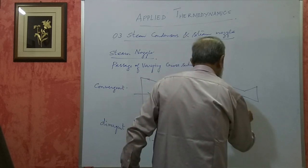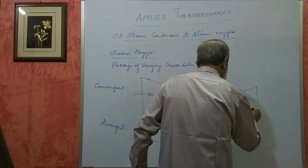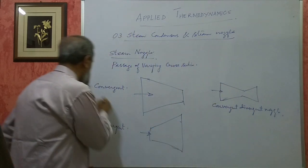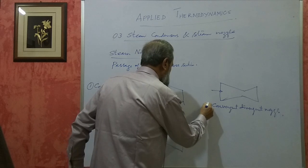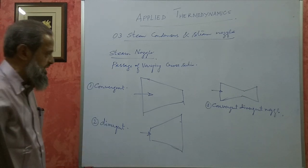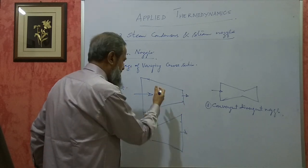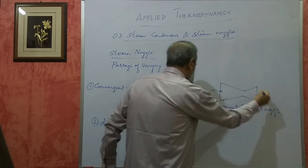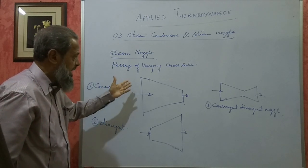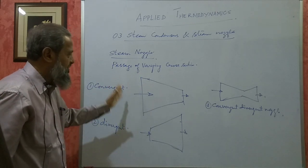So there are three types of nozzles: convergent, divergent, and convergent-divergent. When steam passes through a nozzle it loses its pressure. The exit pressure will always be less than the inlet pressure. The steam expands whenever it passes through a nozzle - its pressure decreases.